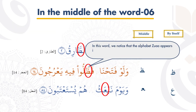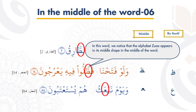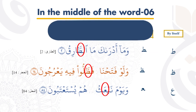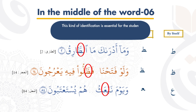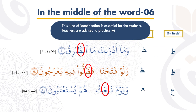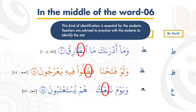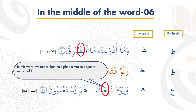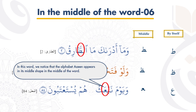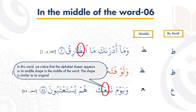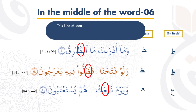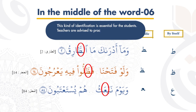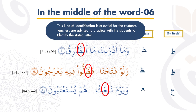In the second and third words as well, we notice that the alphabet Toa appears in its middle shape in the middle of the word. The shape is similar to its original middle shape appearance. This kind of identification is essential for the students. Teachers are advised to practice with the students to identify the stated letter as per its shape.